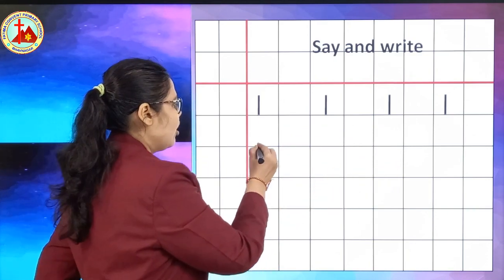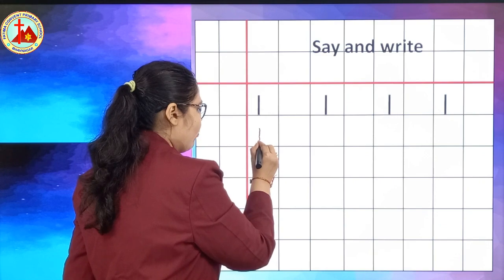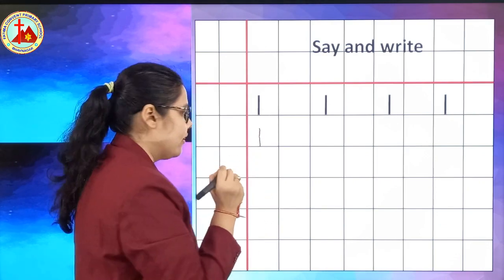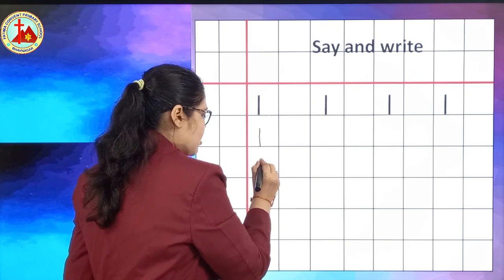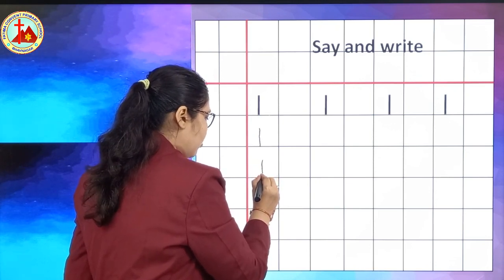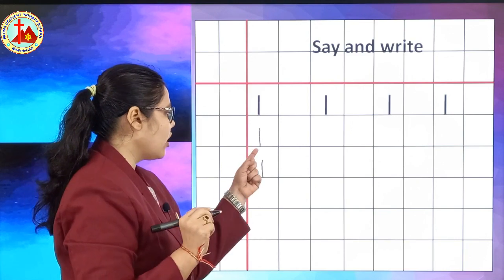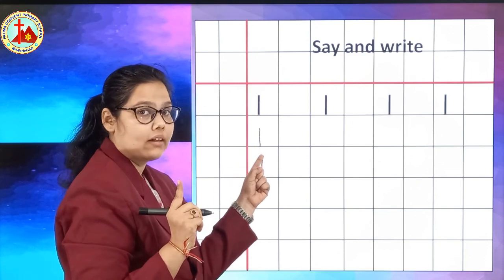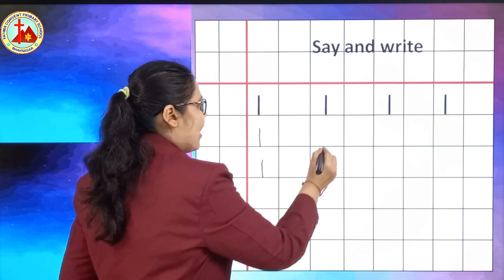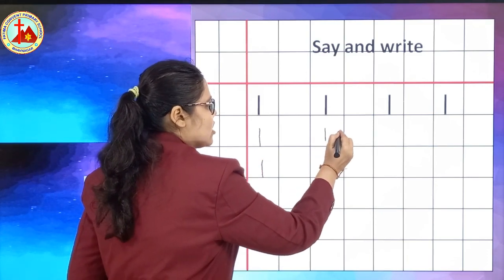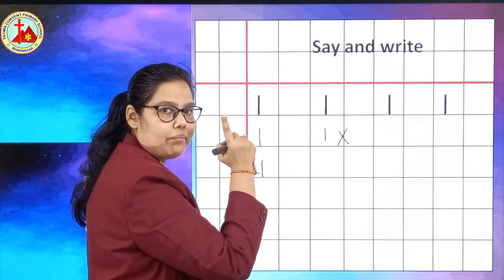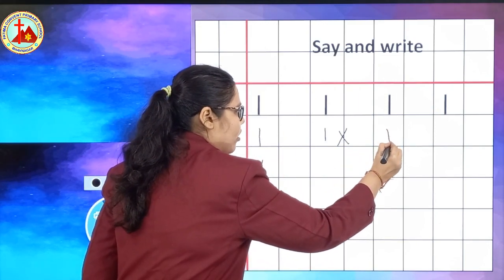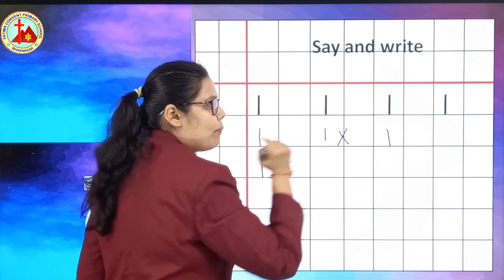Like this. You have to start from upward to downward, 1. You have to say and write. See. Start from upward to downward. Okay. Children, you have to touch the bottom line. Remember, you have to touch the bottom line.